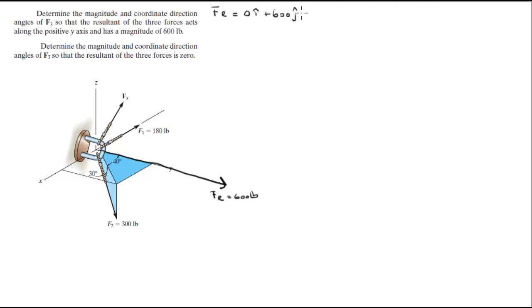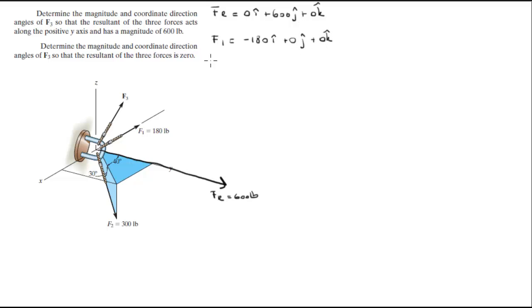So if F of R equals zero i plus 600 j plus zero k, and F1 equals negative 180 i plus zero j plus zero k.